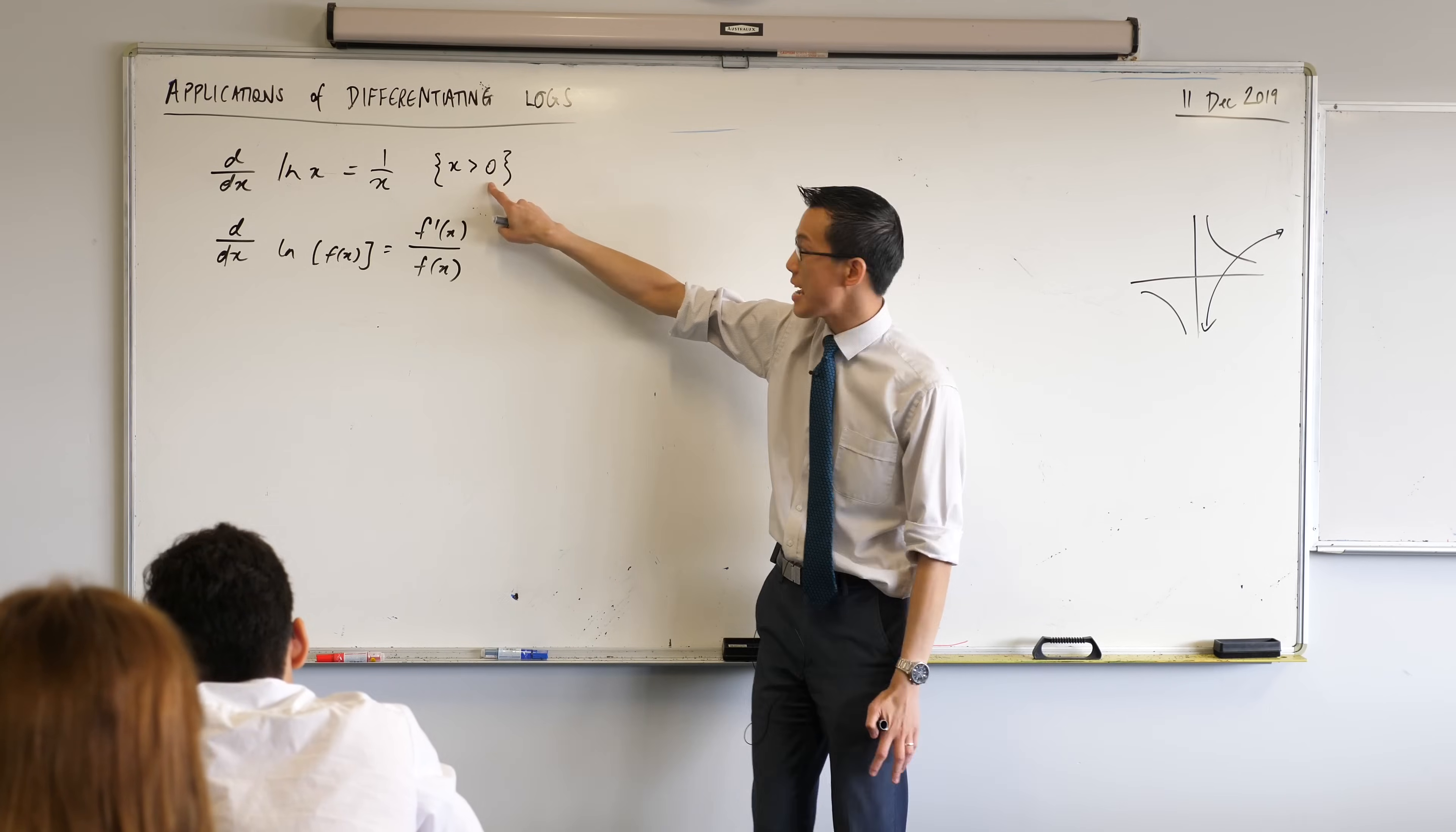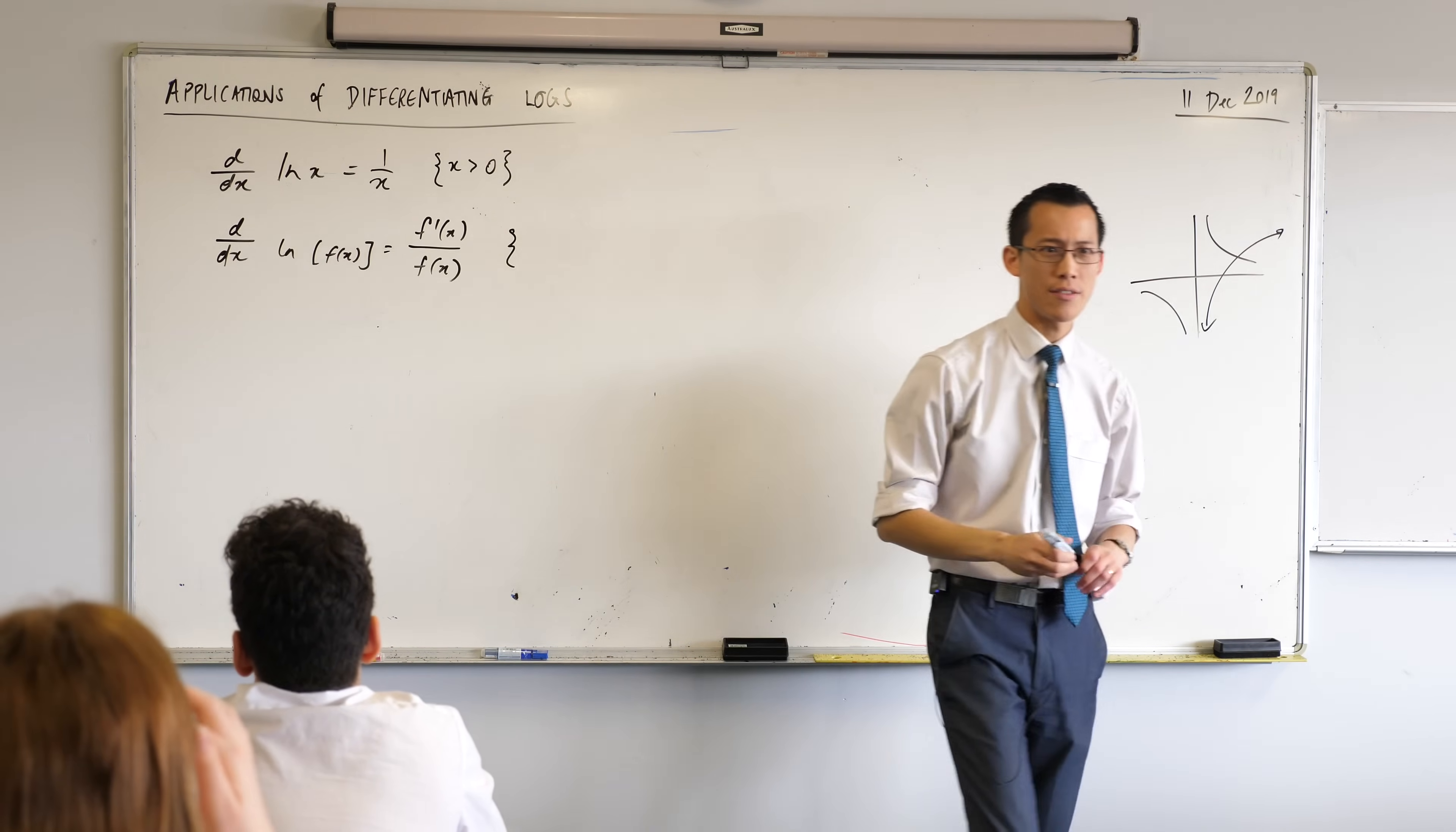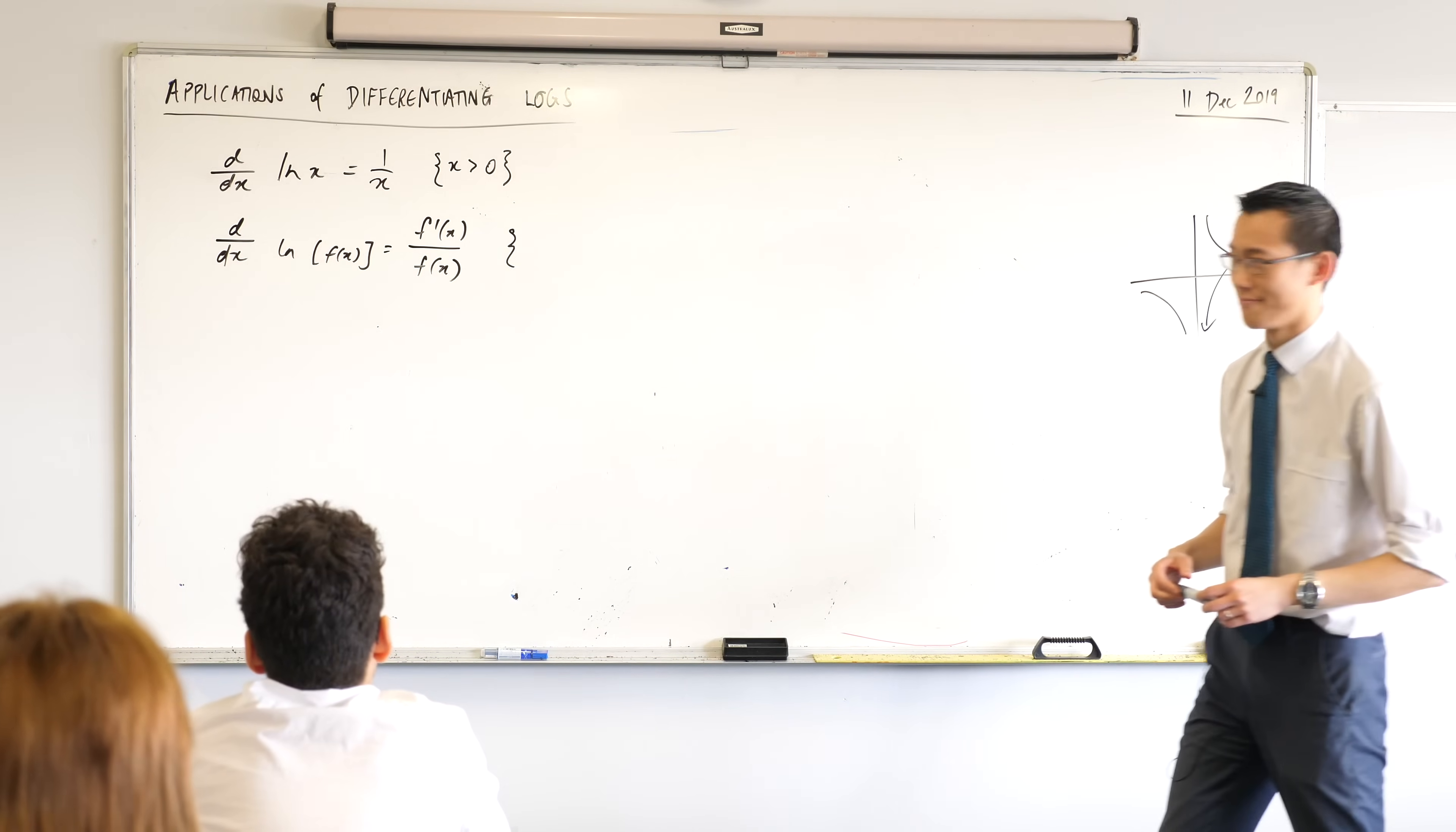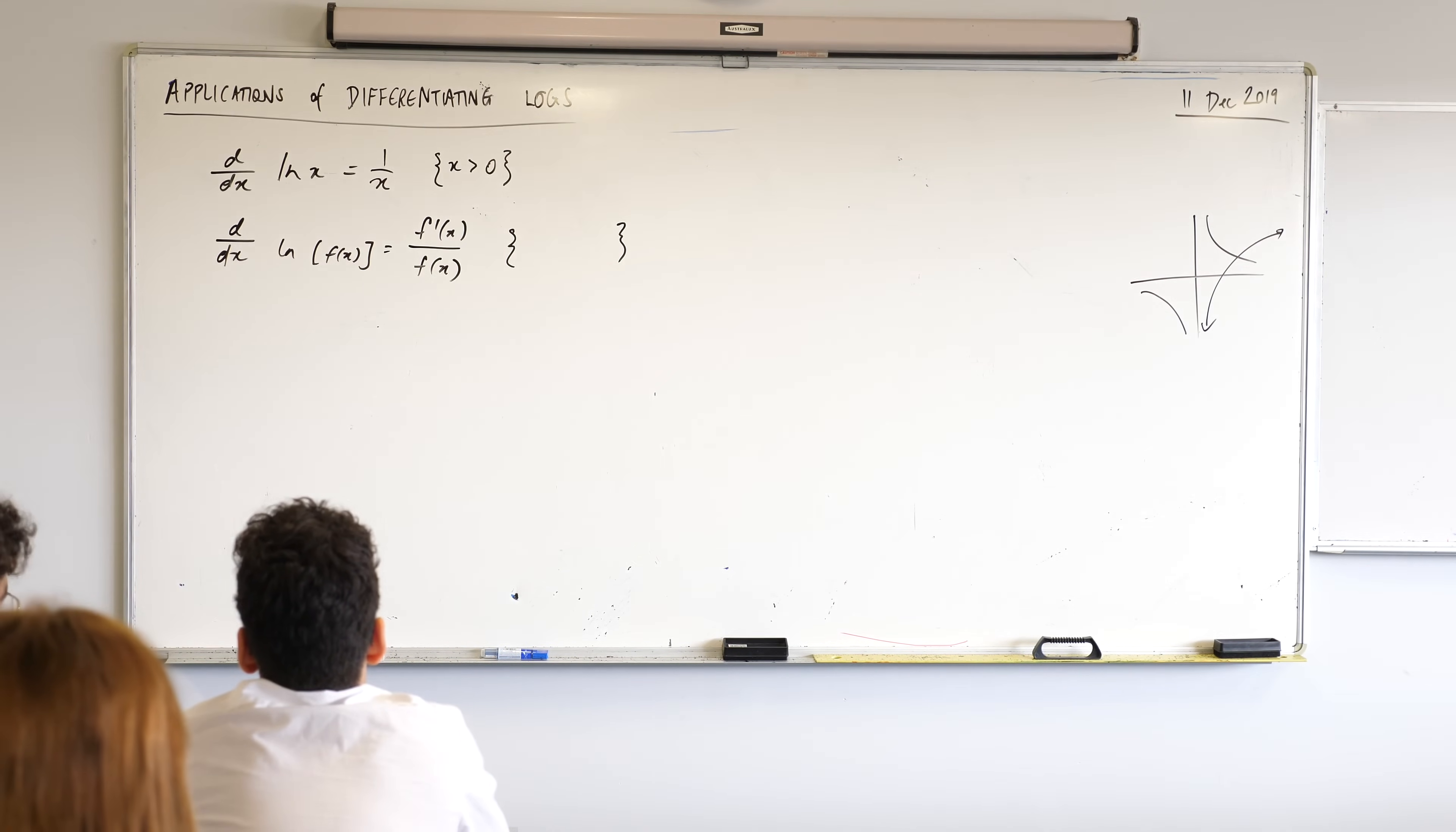But see this. See how we're saying x is greater than zero for this. Well, doesn't that imply we might have a similar issue over here? We're also going to have a domain restriction. Have a think. What domain restriction might make sense? Let me just leave that blank for a second. If you haven't already, open your laptop up. Get Desmos out. And let's just do a quick example.